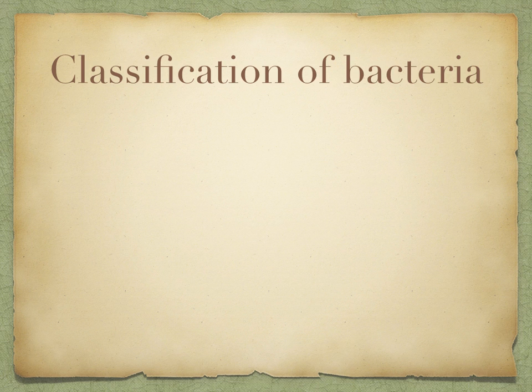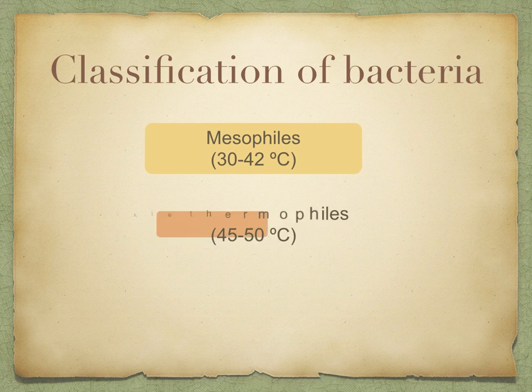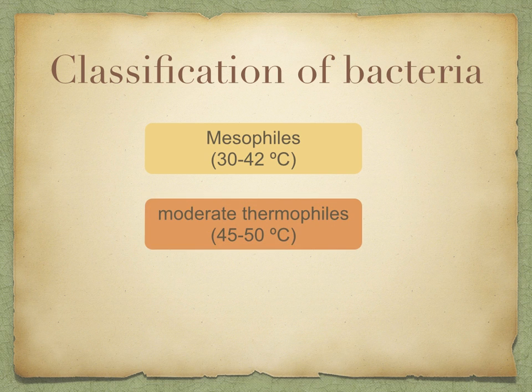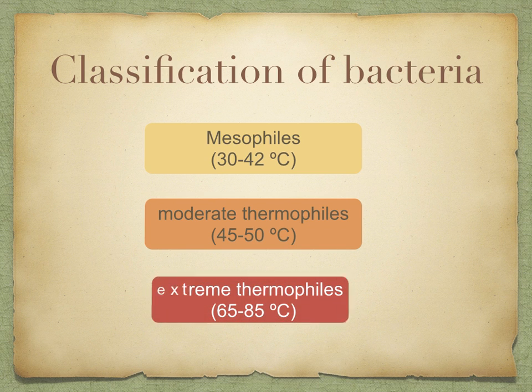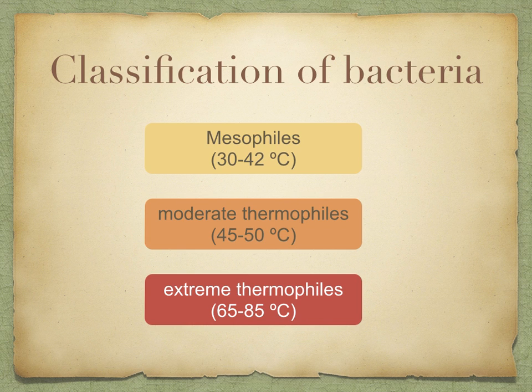Bacteria are classified according to the temperatures at which they're active. These include mesophiles, which work at about 30 to 42 degrees Celsius, moderate thermophiles, and extreme thermophiles, which operate at 65 to 85 degrees Celsius.